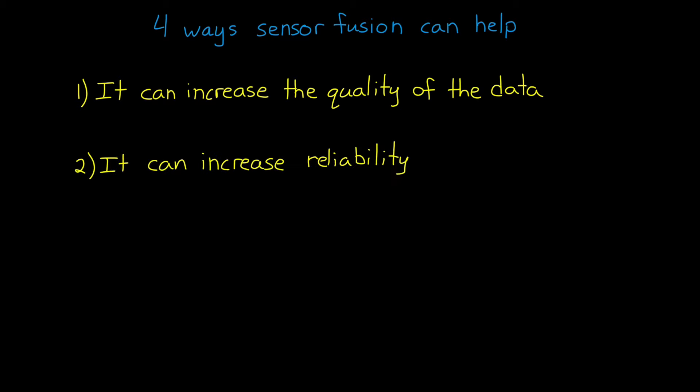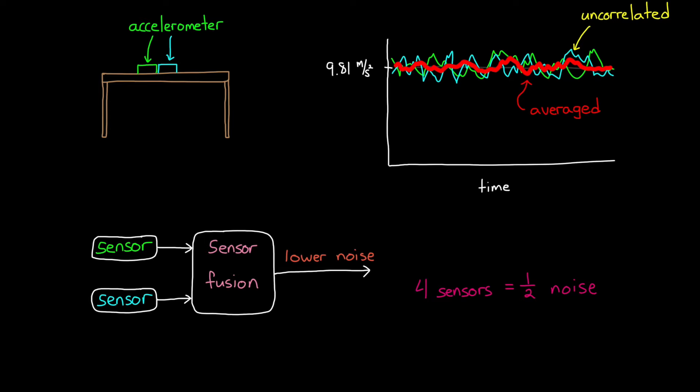The second benefit of sensor fusion is that it can increase reliability. If we have two identical sensors fused together, like we have with the averaged accelerometers, then we have a backup in case one fails. Of course, with this scenario we lose quality if one sensor fails, but at least we don't lose the whole measurement. We can also add a third sensor into the mix, and the fusion algorithm could throw out the data of any single sensor that's producing a measurement that differs from the other two.